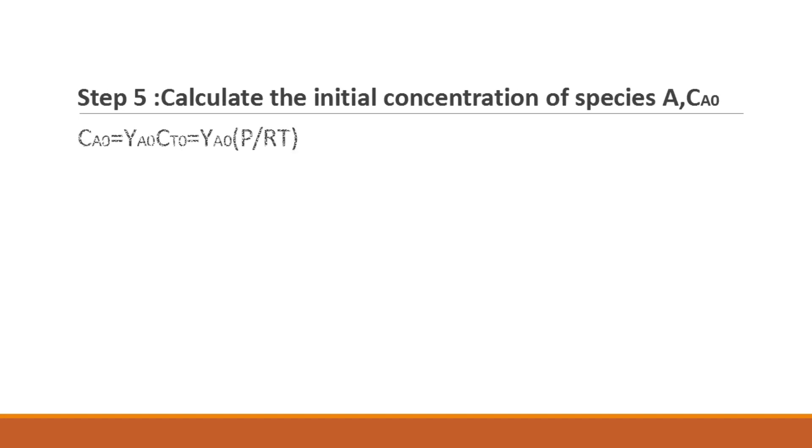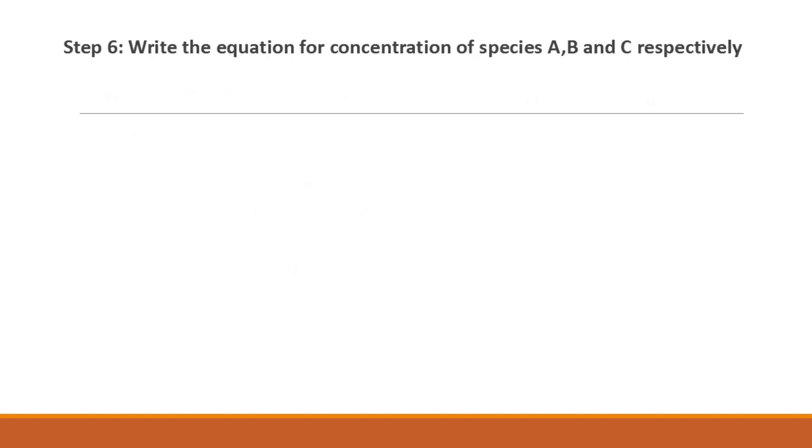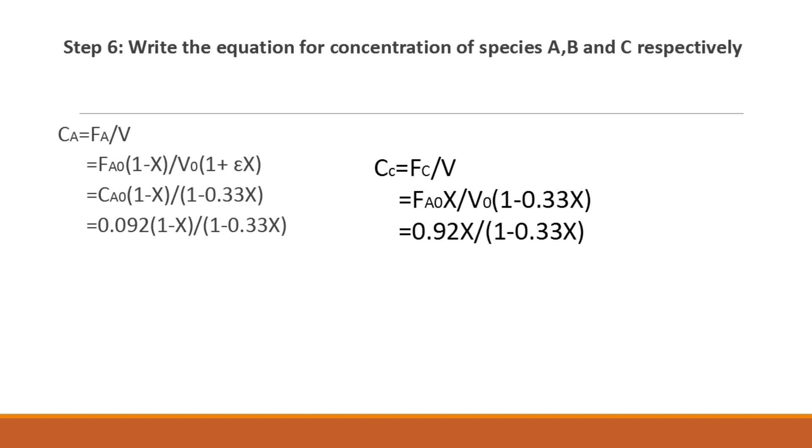After that we use the formula YA0 CT0 to find the initial concentration of species A. Then write the equation for concentration of species A, B and C respectively.